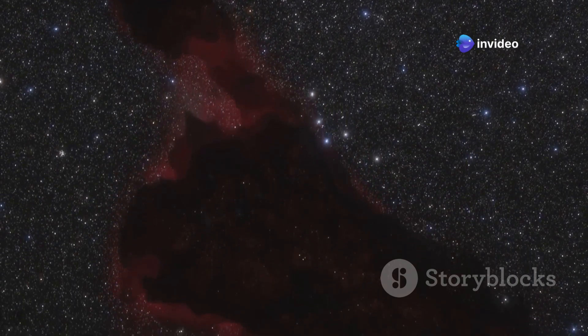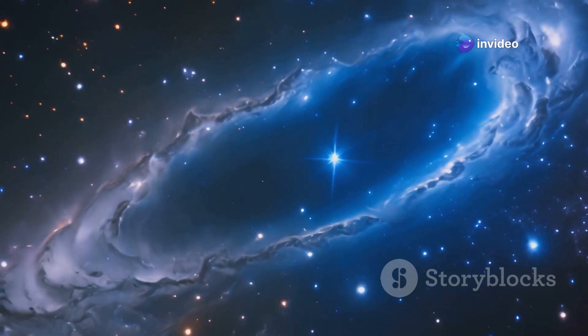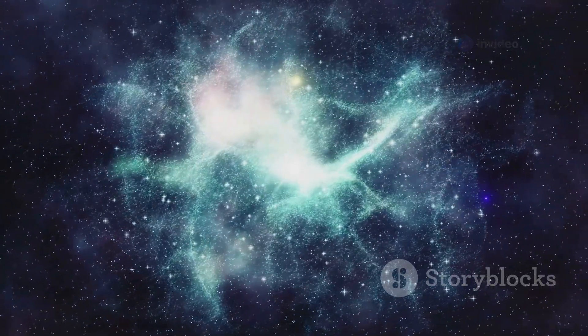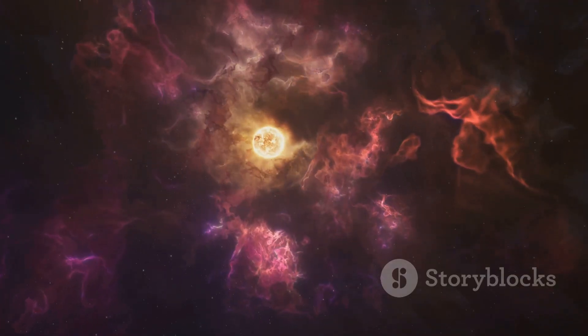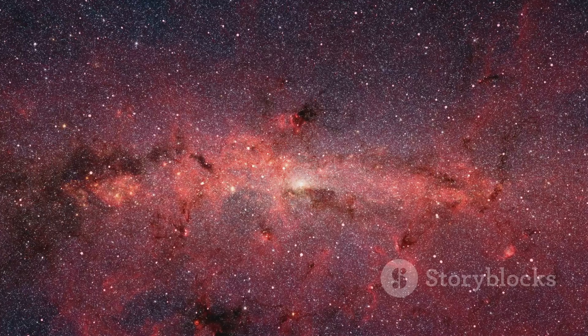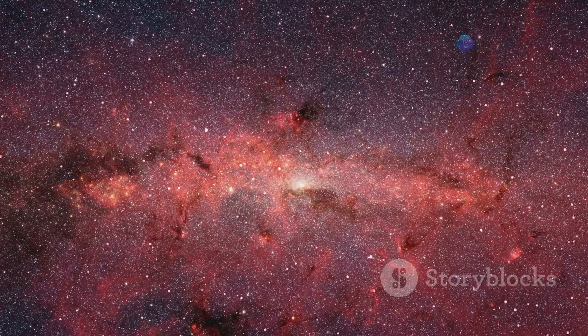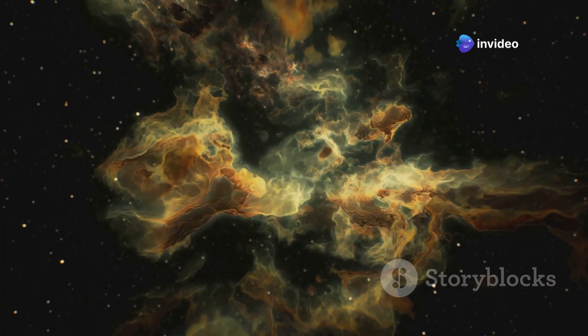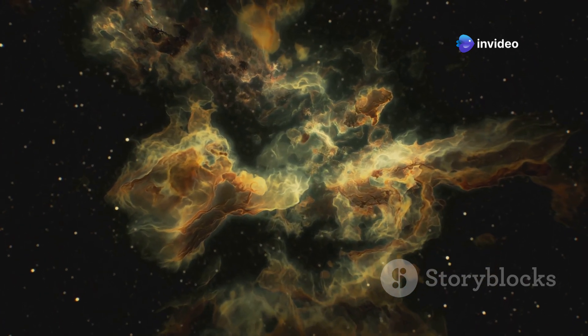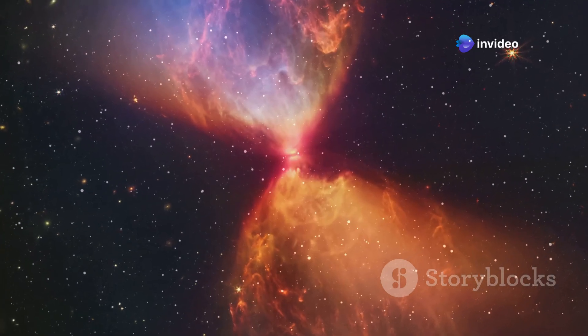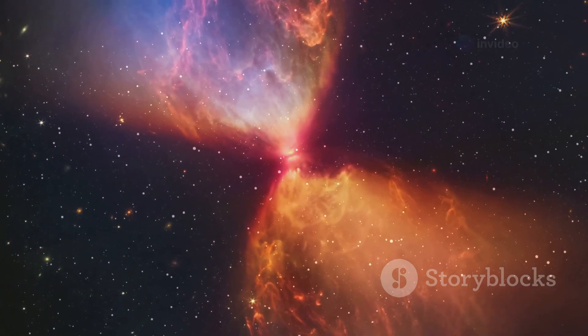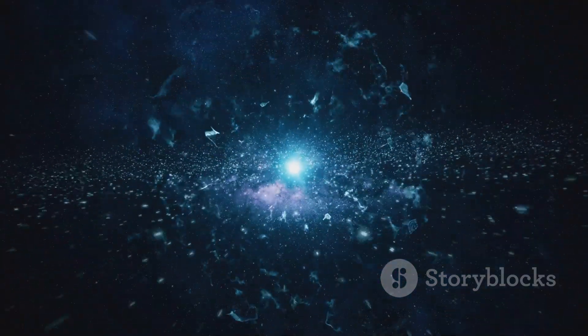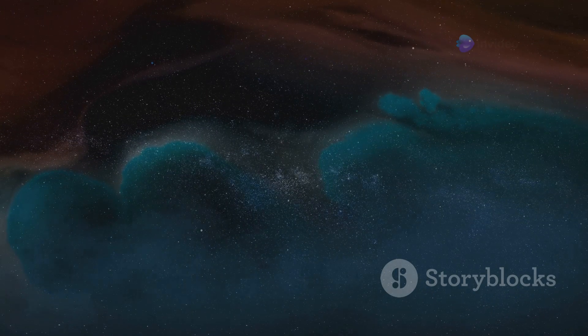Stars are not eternal. They are born, they live, and they die. Hypergiants, despite their size, are no exception. They live fast and die young. Their lifespans are measured in millions of years—a blink of an eye in cosmic terms. Hypergiants form from massive clouds of gas and dust. These clouds collapse under their own gravity, pulling matter inward. As more and more material accumulates, the core temperature and pressure increase. Eventually, nuclear fusion ignites and a star is born.